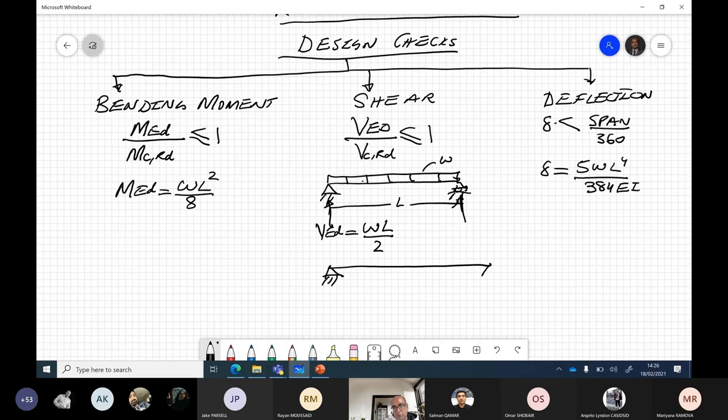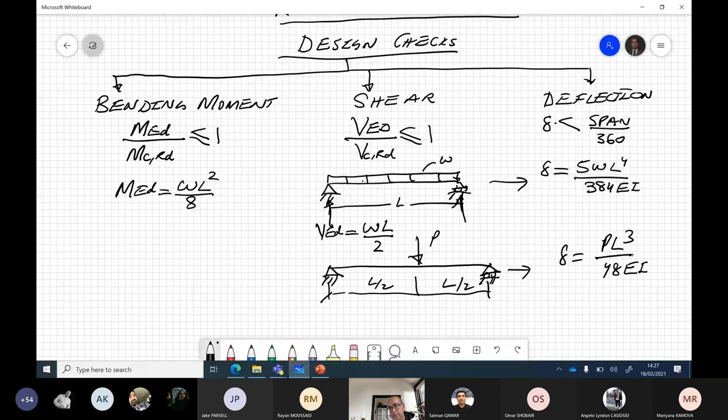Deflection depends on loading conditions. If you have a central point load, then these values will be different. PL^3 over 48EI. This is the deflection limit for central point load.